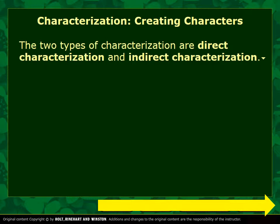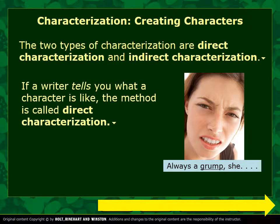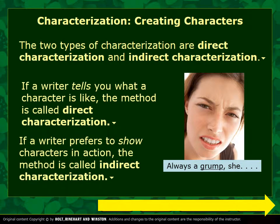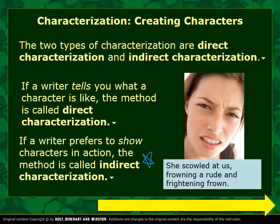The two types of characterization are direct and indirect. If a writer tells you what a character is like, that method is called direct characterization — saying 'she's always a grump' directly tells you that character is grumpy. But a writer prefers to show characters in action, and this method is called indirect characterization. This is really what we mean when we say 'show don't tell,' because that's how you grab your readers. So — 'she scowled at us, frowning a rude and frightening frown' — we still learn she's grumpy, but now we can start to visualize her.